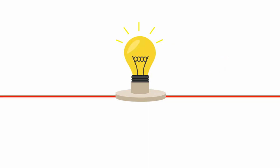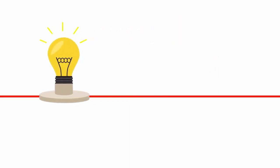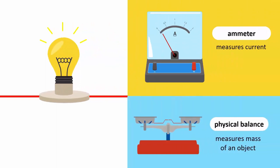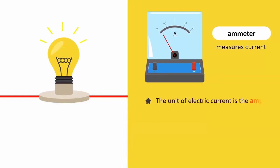To measure the current, we use an instrument called an ammeter, just like we use a physical balance to measure the mass of an object. The unit for electric current is called the ampere, denoted by a capital A.